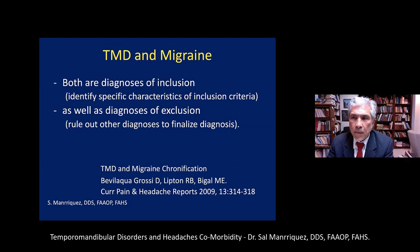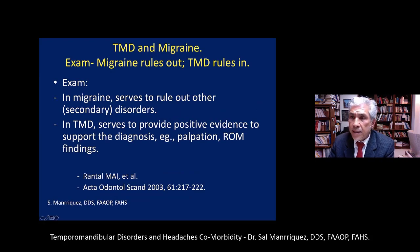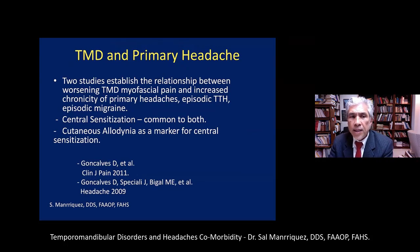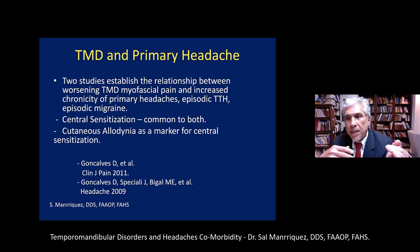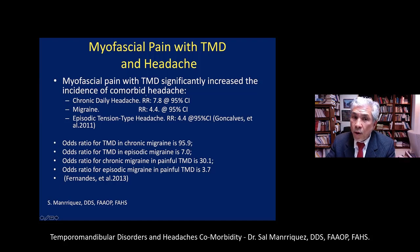TMD and migraine are both diagnoses of inclusion — you're looking for specific criteria to include in the diagnosis as well as ruling out certain things. The exam in migraine is to rule out secondary disorders. The exam in TMD is to provide positive evidence: pain to palpation, altered range of motion. Central sensitization is most likely what's behind TMD making migraine worse and migraine making TMD worse. TMD makes migraine more severe, and also worsens chronic daily headache and episodic tension-type headache.